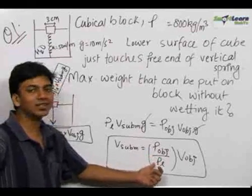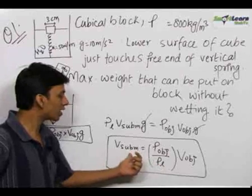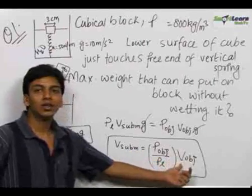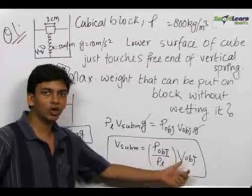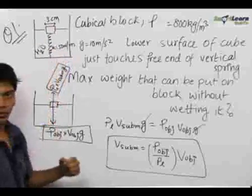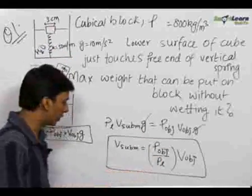Now if the density of the object is less than the density of the liquid the volume submerged will be less than the volume of the object that is the object will be floating in the liquid otherwise the object will sink in the liquid.